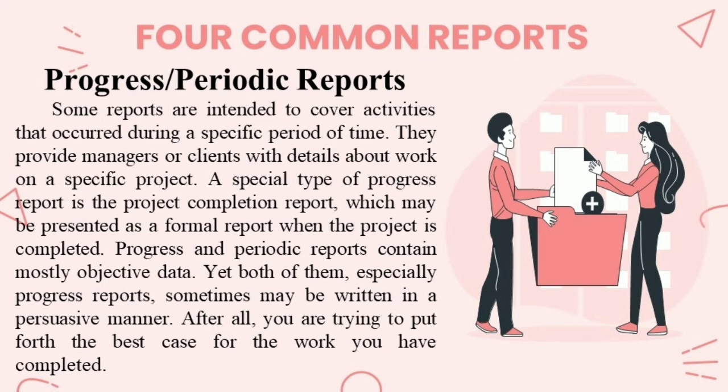Number two: progress or periodic reports. Some reports are designed to cover events that happen during a particular time period, supplying administrators or customers with information about work being done on a given project. The project completion report is a category of progress report that can be published as a structured report after the project is finished. The majority of data in progress and periodic reports are objective; nonetheless, progress reports can be written persuasively at times, as you are attempting to make the best possible case for the work you've done.